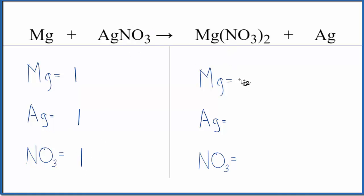Product side, we have one magnesium, one silver, and then we have a nitrate, one times two. So we have two of those.